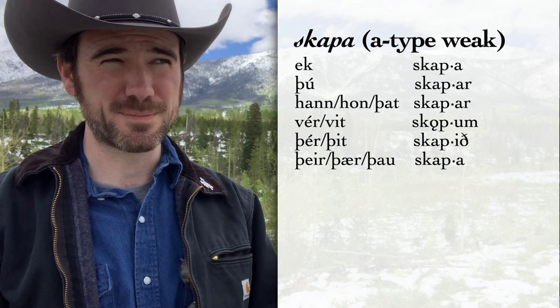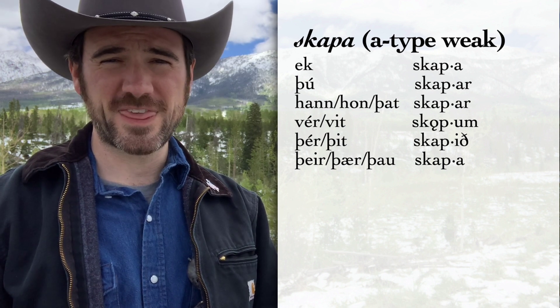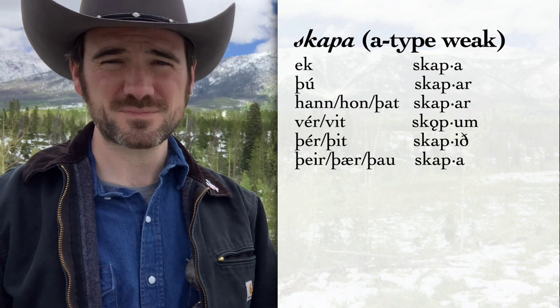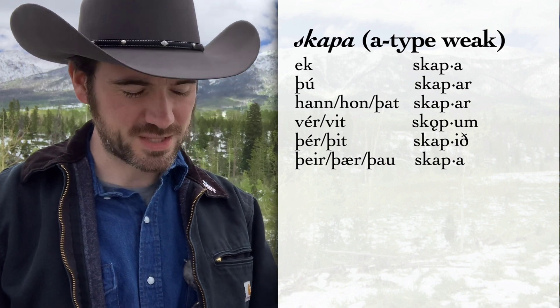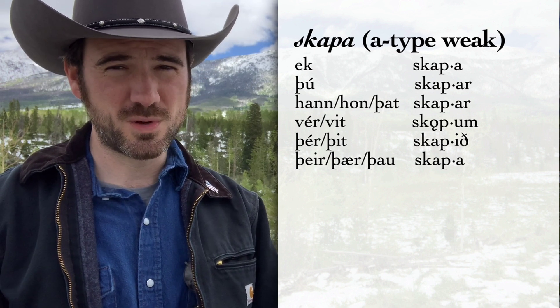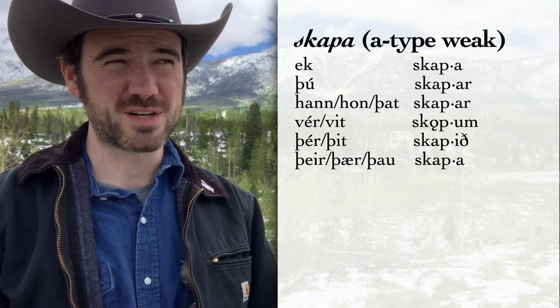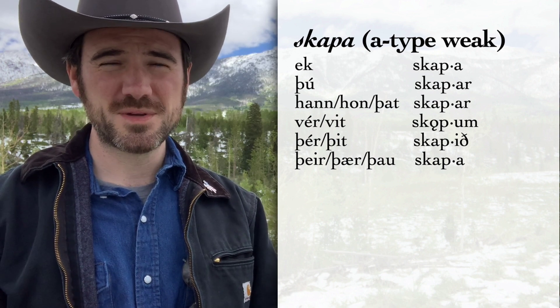Let's talk about the A-types. The plurals in the present are going to be the same — most verbs take -um, -ið, -a. The present singular is a little bit different because we have A's instead of I's. Let's look at skapaðr, 'create,' related to English 'shape.' Ek skapa, I create. Þú skapar, you create. Þat skapar, it creates. Notice this is just like -i, -ir, -ir in the I-type, but we've got -a, -ar, -ar in the A-type. Then the present plural is the same: vér skǫpum — notice we've got that U-mutation. A U will always change an A in the preceding syllable into an ǫ. So vér skǫpum, not skápum. Þér skapið, y'all create. Þau skapa, they create.